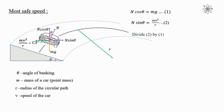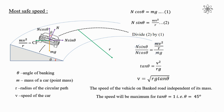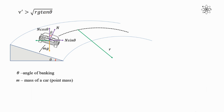Dividing equation (2) by equation (1): N sin theta / N cos theta = (mv²/r) / mg. Cancelling N and m, we get tan theta = v²/rg. Therefore, the most safe speed v = √(rg tan theta). Note there is no term m (mass) in this formula — the speed of the vehicle on a banked road is independent of its mass. The speed is maximum when tan theta = 1, i.e., theta = 45°.